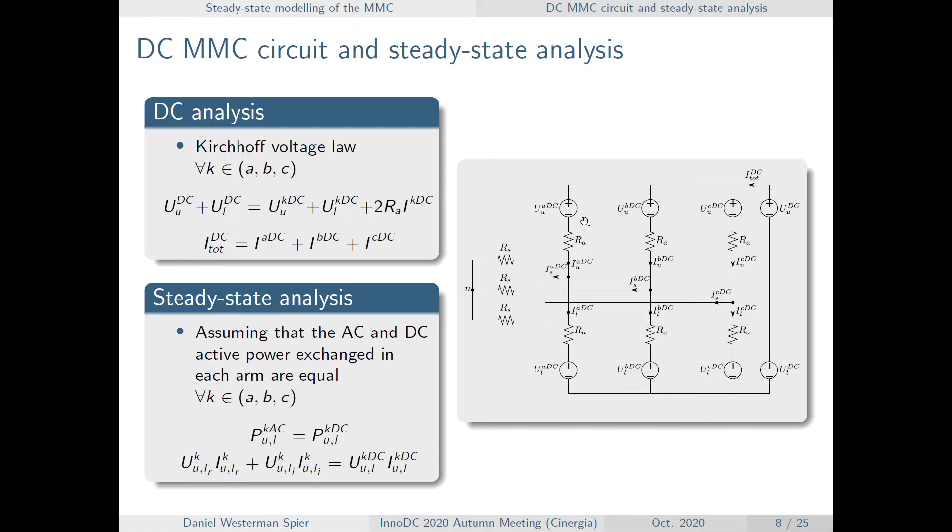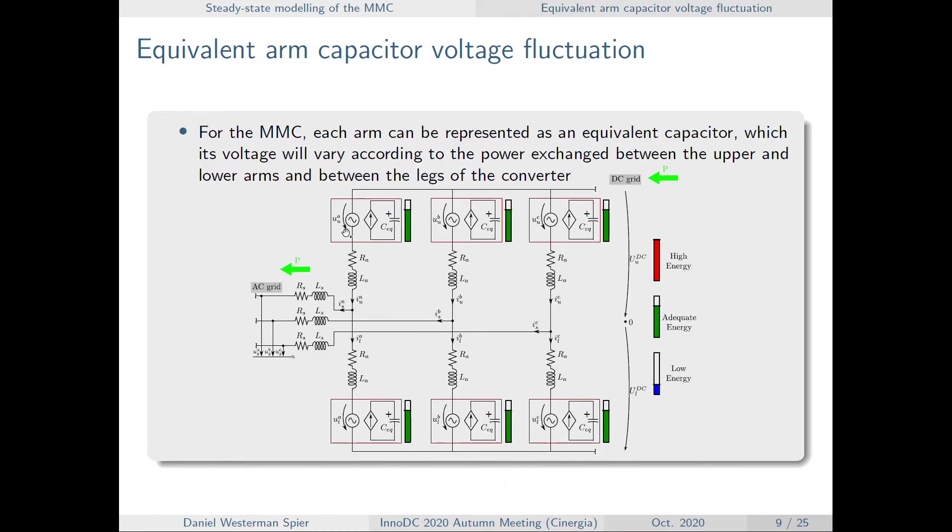Another interesting thing that we are considering in this optimization problem is the voltages in the submodule, the maximum and minimal voltages in the submodule capacitors. To analyze them, we're going to apply the arm averaged model, which is represented as this figure here.